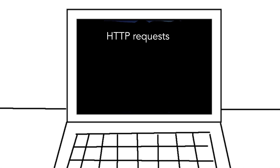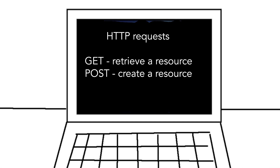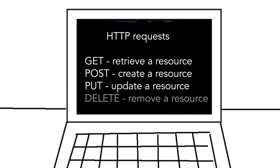These are the most important HTTP request methods for the communication between client and server. With a GET request you can retrieve a resource or a collection of resources. With a POST request you can create a resource. With a PUT request you update a resource, and with the DELETE request you can remove a resource.